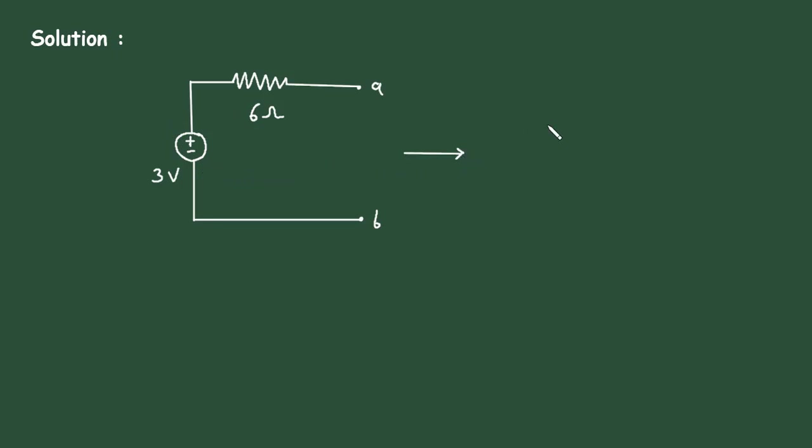This circuit will be converted like this. Here, this will be the current source and the direction will be upward because the positive terminal of voltage is on the upper side and negative on the lower side. That's why the current direction will be like this.